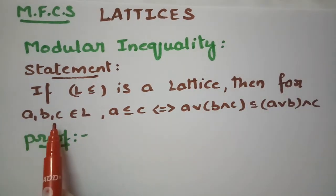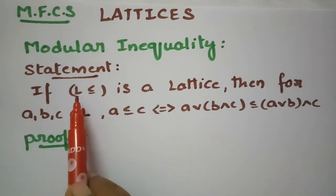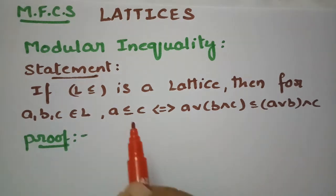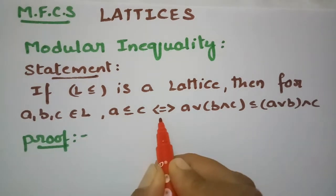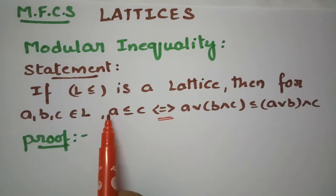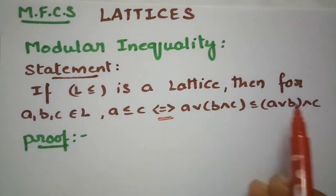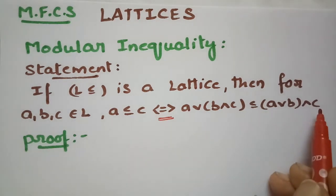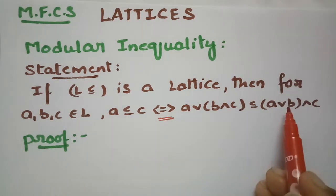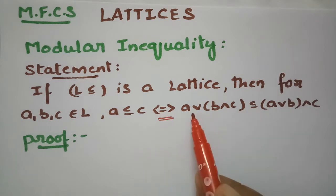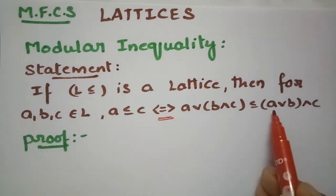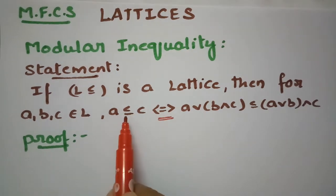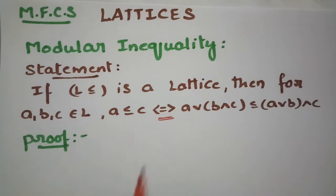For A, B, C belonging to the set L, there is a double implication. We have to assume A ≤ C and prove that A∨(B∧C) ≤ (A∨B)∧C, and conversely we have to suppose A∨(B∧C) ≤ (A∨B)∧C and prove that A ≤ C.